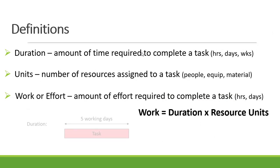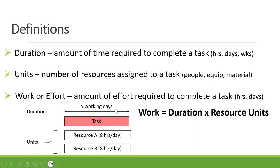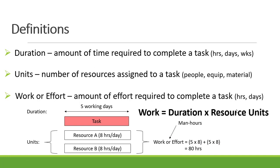Duration is the amount of time required to complete a task — it can be hours, days, or weeks. In our example, the duration is five working days. Units refers to the number of resources assigned to a task — people, equipment, or material. For this example we work with people: two people assigned, each working eight hours per day. Work is the amount of effort required, calculated as duration times resource units. So work equals resource one (5 days × 8 hours = 40 hours) plus resource two (5 days × 8 hours = 40 hours), totaling 80 hours.